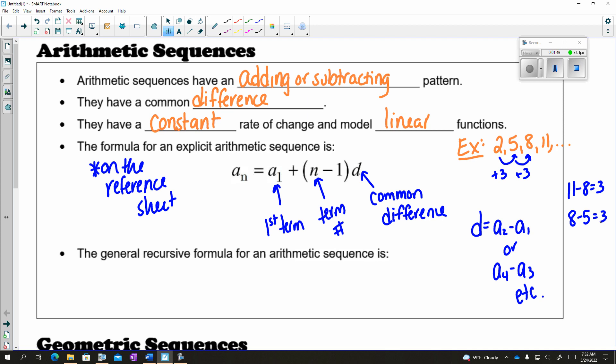Our general recursive formula for an arithmetic sequence. Remember, with recursive, you always need two pieces. So my first term is going to equal some number, and then any term is always the previous term plus whatever your common difference is. And that's all about our arithmetic sequences.